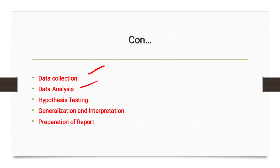The seventh step is data analysis. When data is collected, it is forwarded for analysis, which is the most technical job. Data analysis is divided into two main categories: data processing — which includes data editing, coding, classification, tabulation, presentation, and measurement — and data exposition, which includes description, analysis, explanation, narration, conclusions or findings, and recommendations or suggestions.